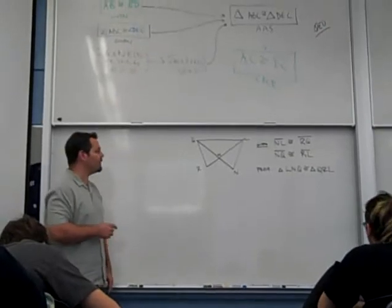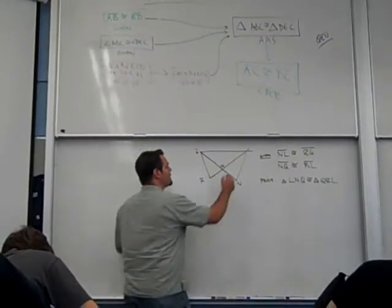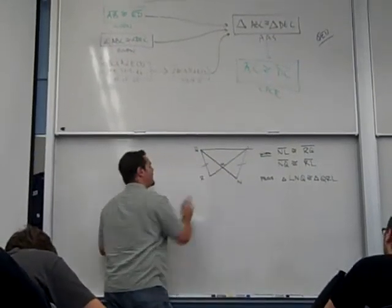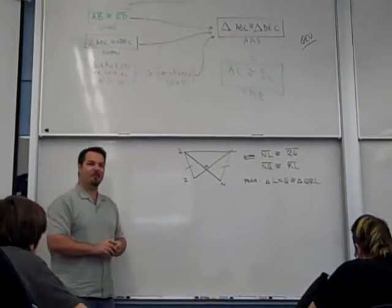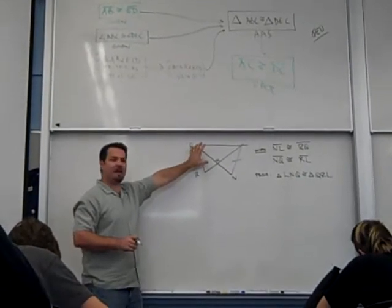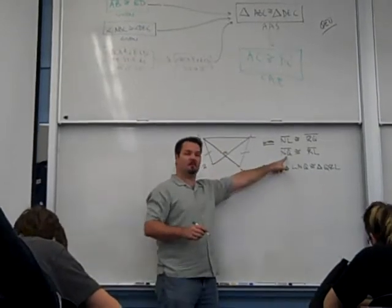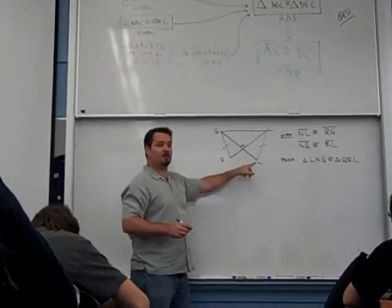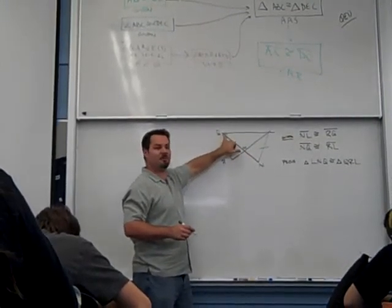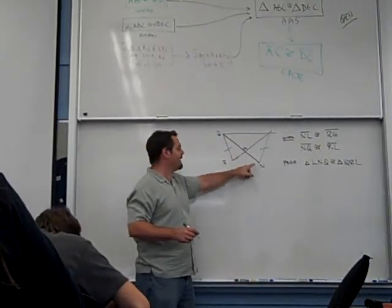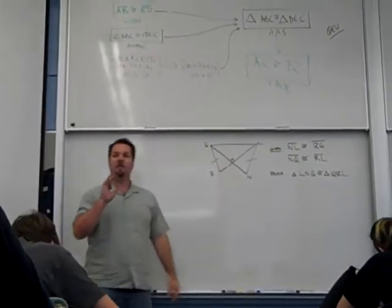It's called an overlapping triangle problem. Let's begin by establishing NL is congruent to QR, and NQ is congruent to RL. There's a problem here because if I put the mark here, doesn't it look like NQ? How do I mark that this is congruent to that? If I put it here, it's going to look like NQ. If I put it here, it's going to look like MN.